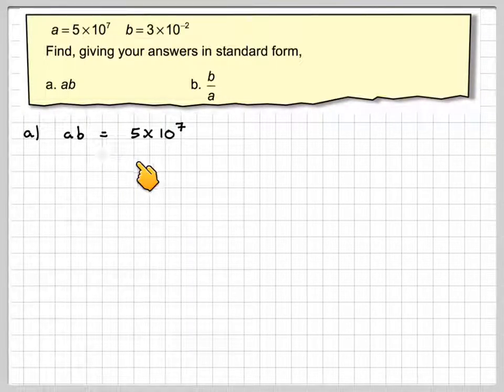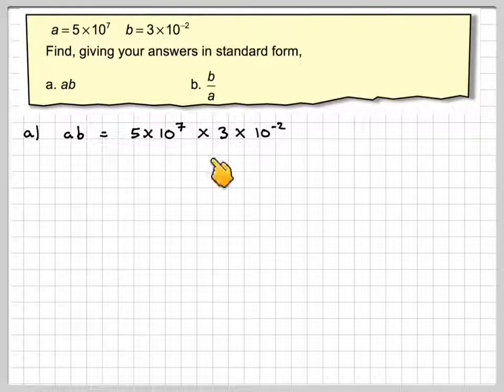So we've got AB is 5 times 10 to the 7 times 3 times 10 to the minus 2. Now on our calculator we should be using the standard form button.